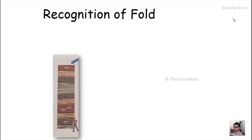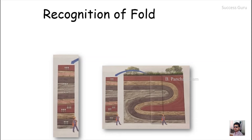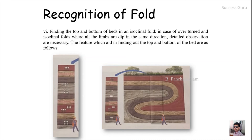In a regular stratigraphic section the top bed is youngest and the bottom is oldest with no fold. However, due to isoclinal or recumbent folds, beds may appear as a homoclinal sequence and we cannot identify a fold without additional tools. We can find out if the bed is inverted by determining the top and bottom of the bed — if inverted, it could be due to an isoclinal or recumbent fold.